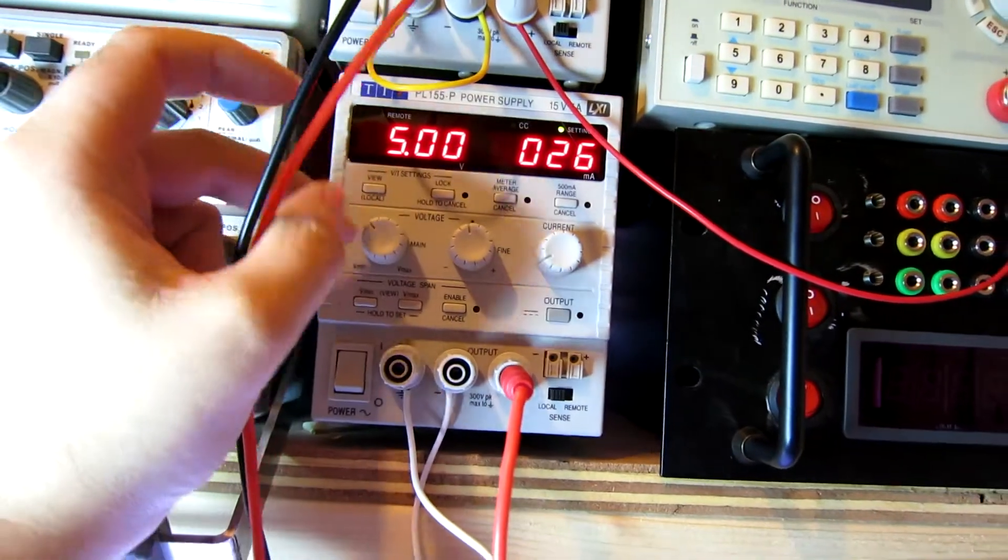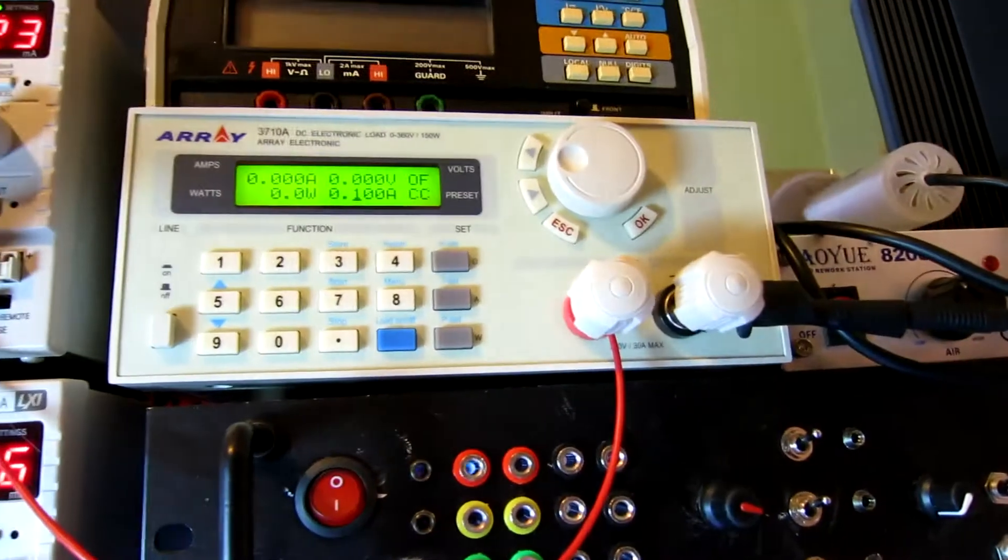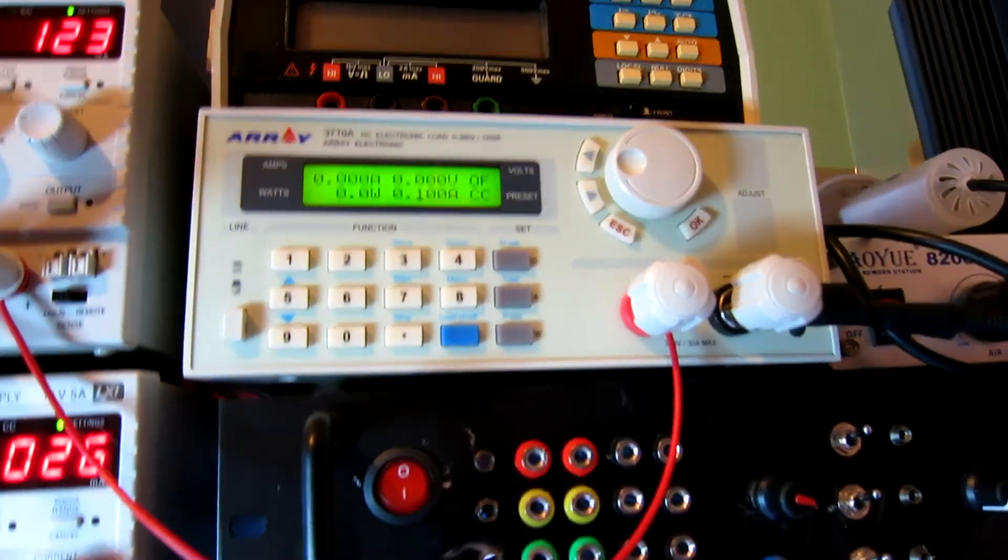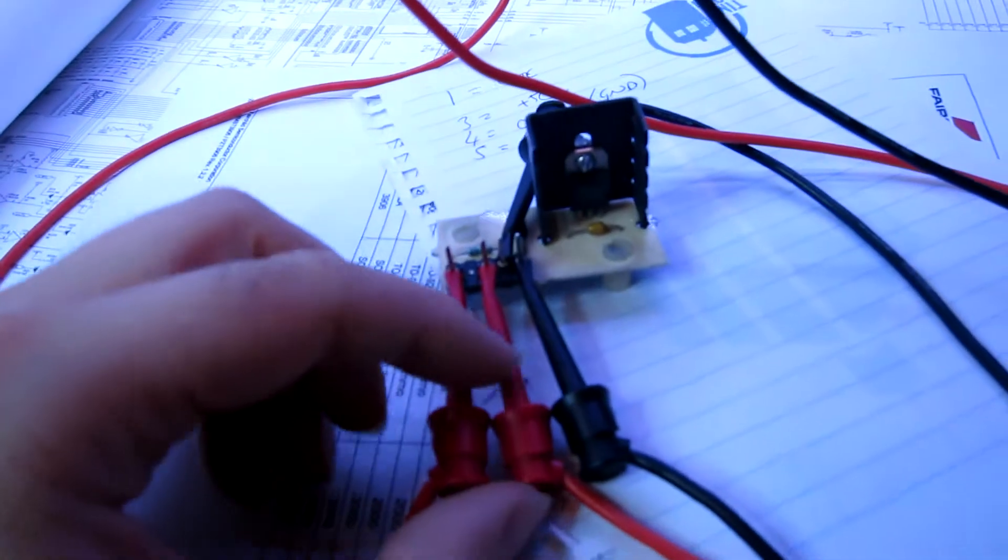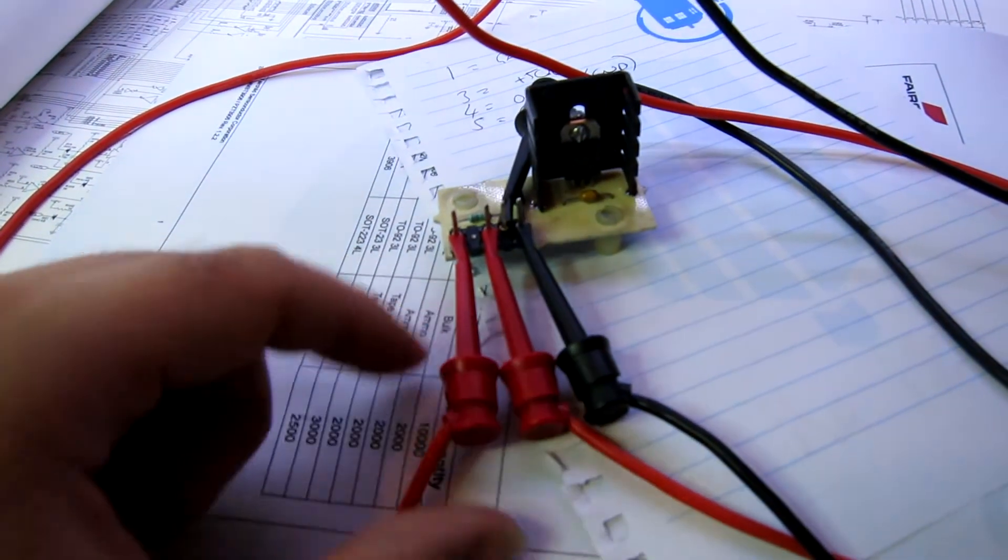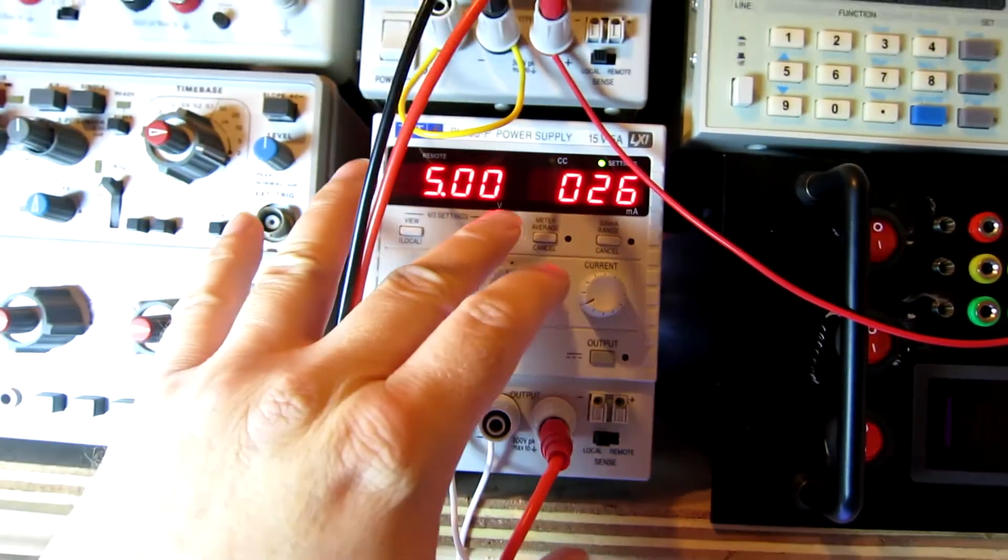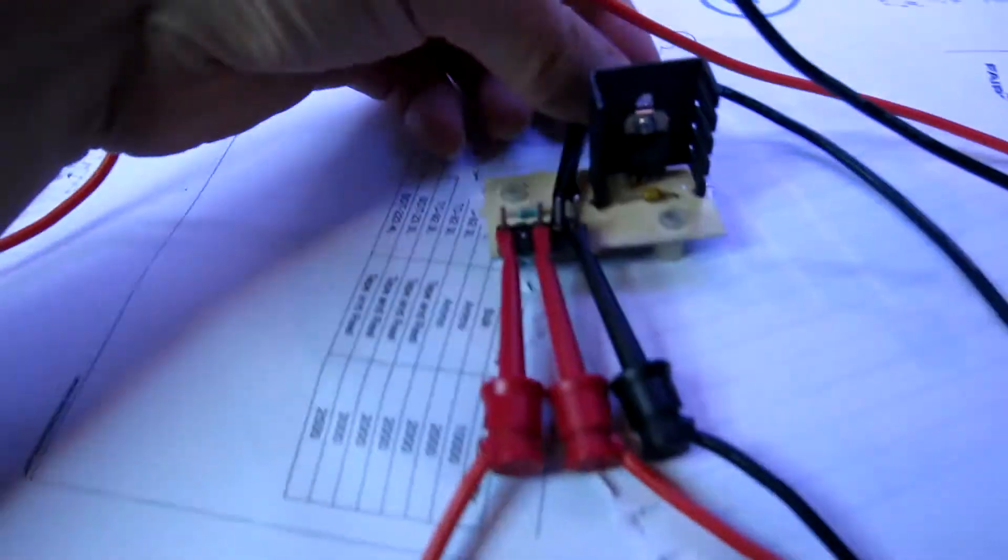We'll set this one to 5 volts so we can basically switch between 5 and 0 to control the gate. And then we've got our load tester here. So again, that's our ground, that's our input reference voltage, this is our gate control.